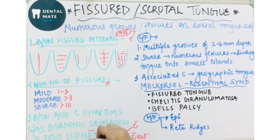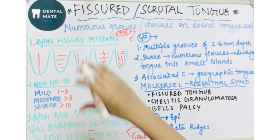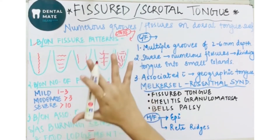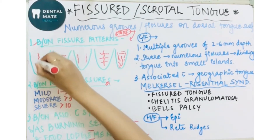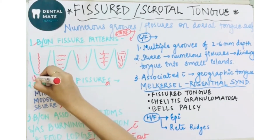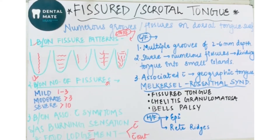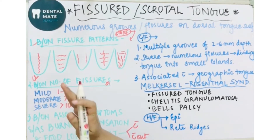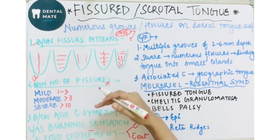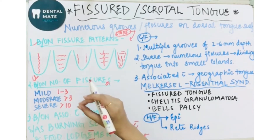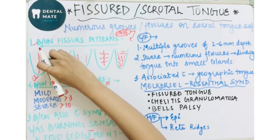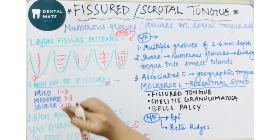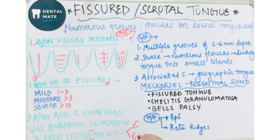Based on fissure pattern, the first type is central longitudinal — here there is a vertical fissure running along the midline of the tongue. The second type is central transverse — here horizontal fissures are present, and these fissures are crossing the midline of the tongue.